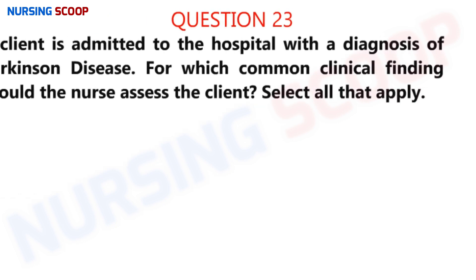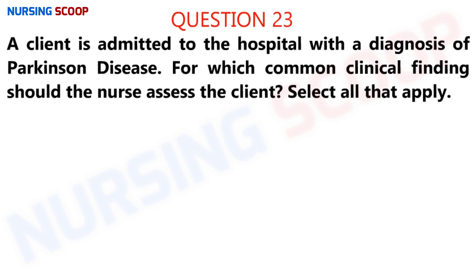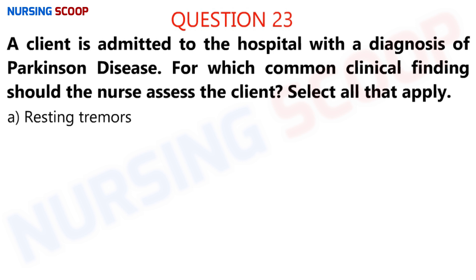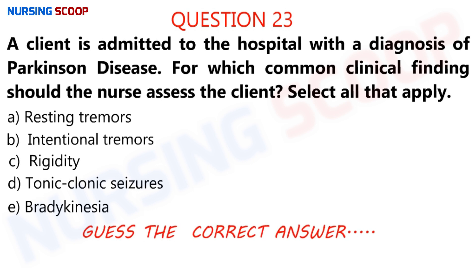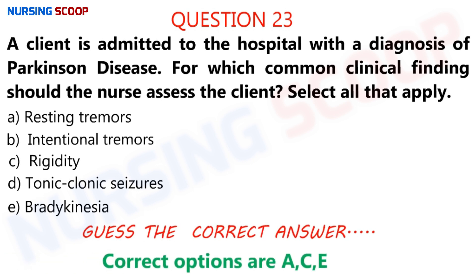Question number 23: A client is admitted to the hospital with a diagnosis of Parkinson's disease. For which clinical findings should the nurse assess the client? Select all that apply. Option A is resting tremors. Option B is intentional tremors. Option C is rigidity. Option D is tonic-clonic seizures. Option E is bradykinesia. The correct options are A, C, and E.